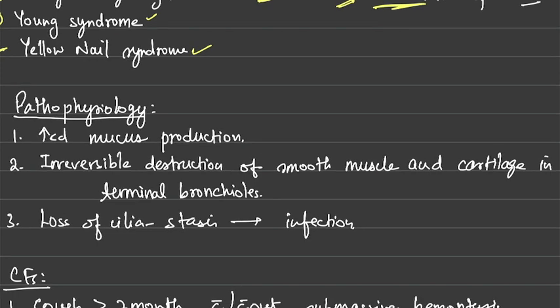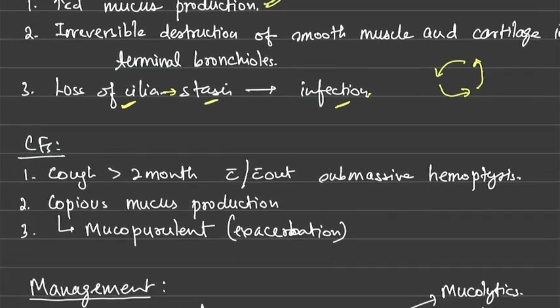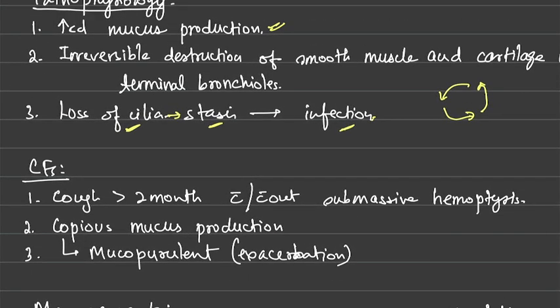The pathophysiology involves increased mucus production and irreversible destruction of smooth muscle and cartilage in terminal bronchioles and bronchi. There is loss of cilia, which causes stasis and eventually infection. Infection again causes increased mucus production, loss of ciliary clearance, more stasis, and more infection — creating a vicious cycle of stasis, infection, and mucus production.